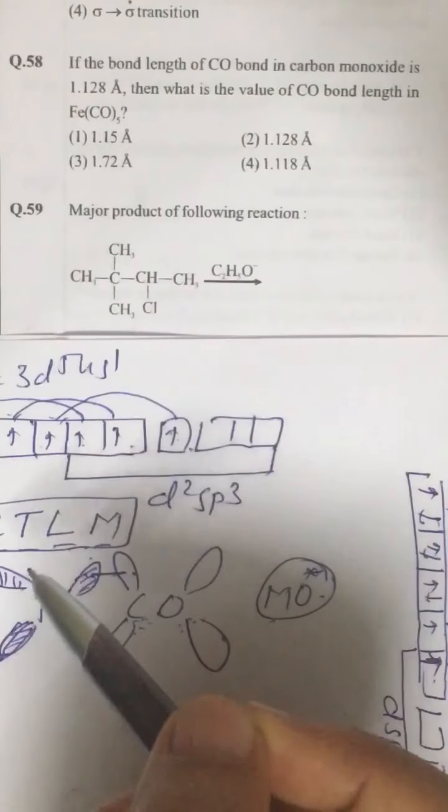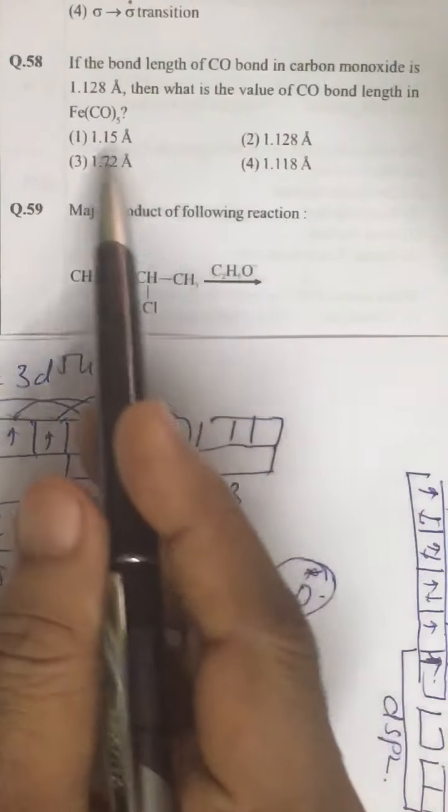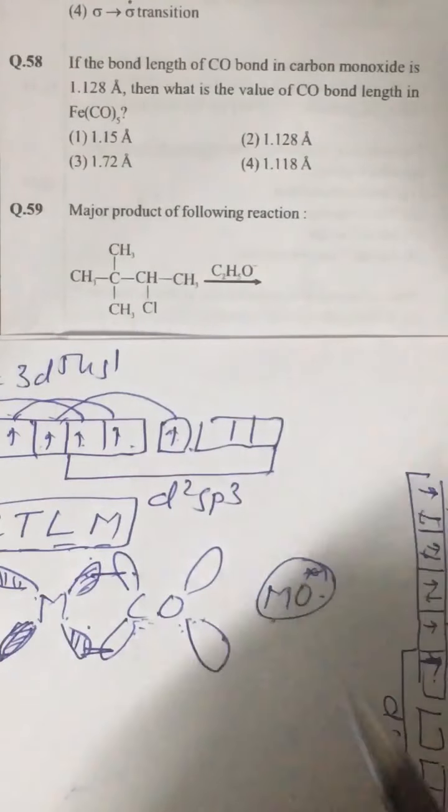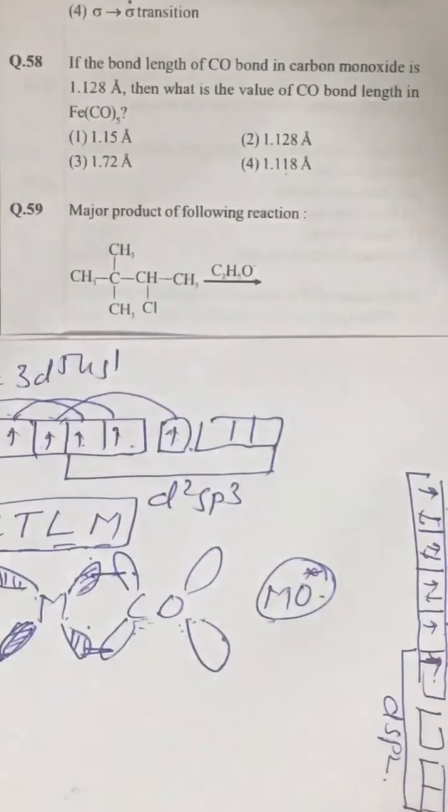And the bond length is less than 1.128. So it is 1.15. First option. There are two lower values. Actually, it should not be there. 1.15 is the correct answer.